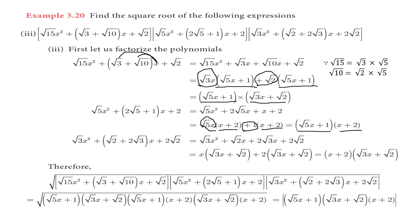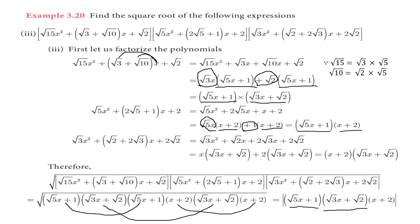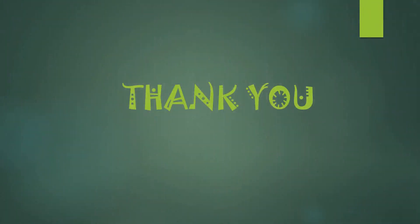So the square root of the given expression: we have two terms. The first is (√5x plus 1), appearing in both the first and second polynomial. The common factor (√3x plus √2) appears in two terms, and (x plus 2) appears once. This is the square root of the given polynomial expression — that is the answer for this sum. Thank you, students.